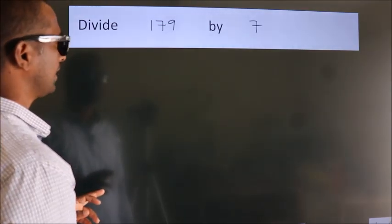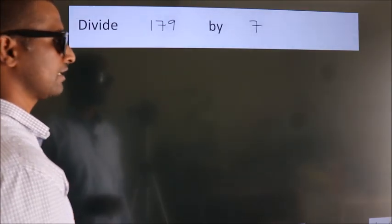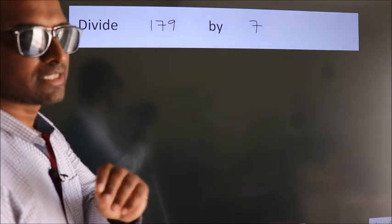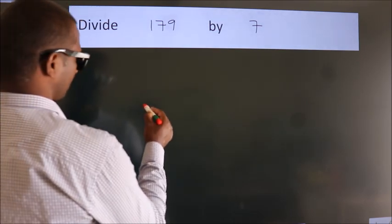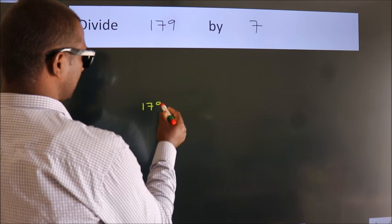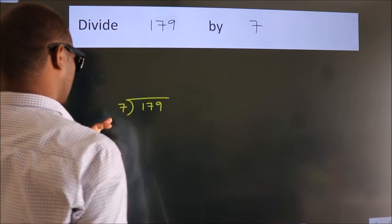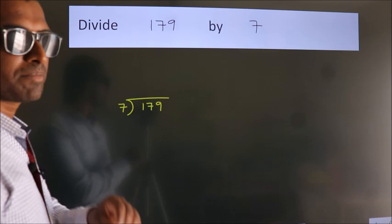Divide 179 by 7. To do this division we should frame it in this way: 179 here, 7 here. This is your step 1.